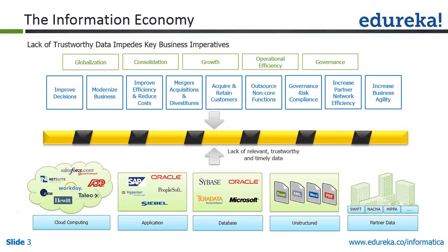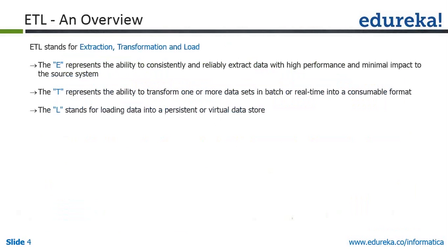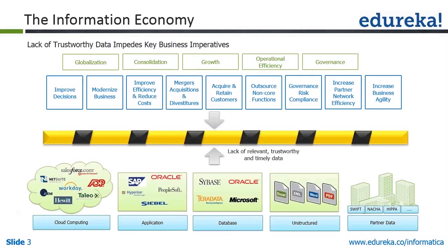There are challenges in acquiring and retaining customers — especially for telecom companies — outsourcing for non-core business, compliance and governance like HIPAA, increased partner network efficiency, and business agility. All these activities are driven by five key terms: globalization, consolidation, growth, operational efficiency, and governance. The core problem is represented by that yellow and black bar — integrating data from all these applications to create a uniform data store that helps drive KPIs and metrics on a real-time or latency-defined basis. That is where Informatica helps us.